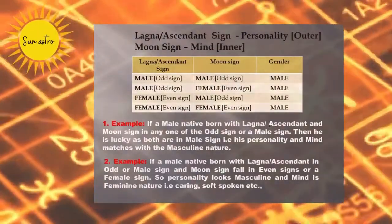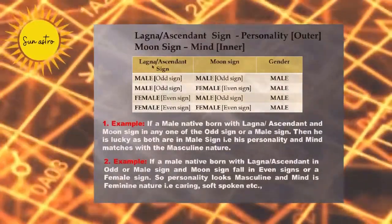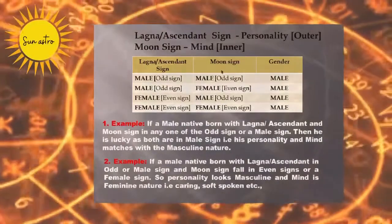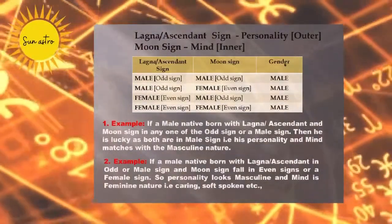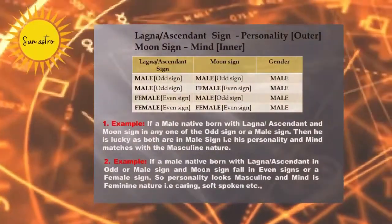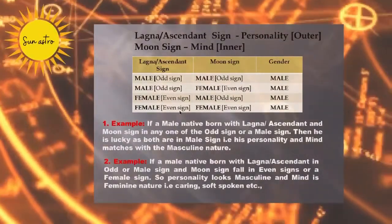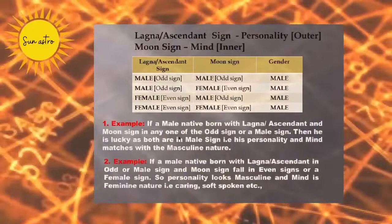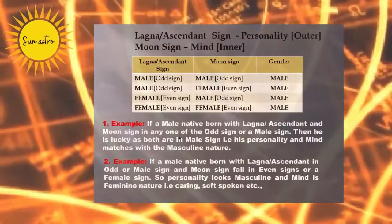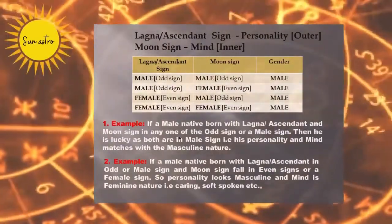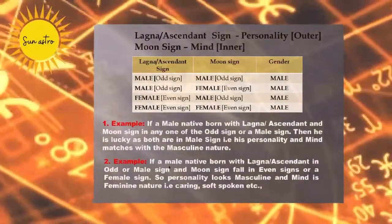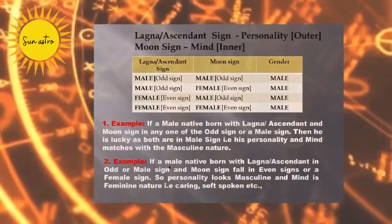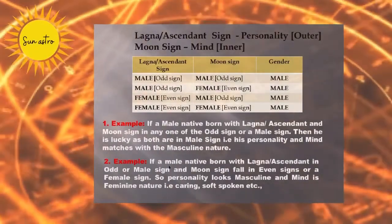Now we move on to the next slide. Here there are three columns. The first column is the Lagna or Ascendant sign, which indicates the outer personality. The second column is the Moon sign, which indicates the inner mind. The third column is the gender. Some examples are given to understand this concept. For a male native: in example 1, if the Lagna and Moon sign are both in any male sign, then he is lucky as both personality and mind match with masculine nature. In example 2, if a male native has Lagna in a male sign and Moon in a female sign, then the personality looks masculine but the mind is feminine in nature.